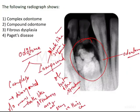Now, the question asks: the following radiograph shows complex odontoma or compound odontoma? It is now clear that the answer is option two — compound odontoma.